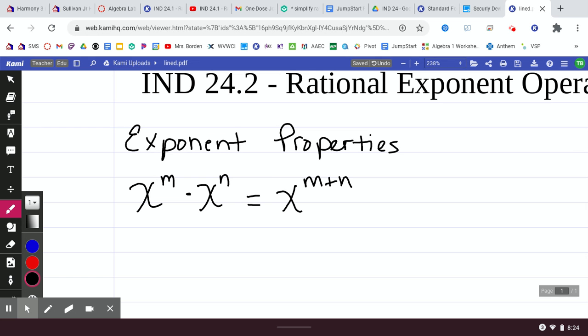When we had x to the m over x to the n, your base stayed your base. What did we do with those exponents? Subtracted them. So, we had m minus n.